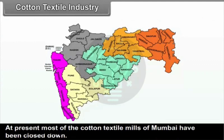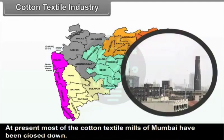At present, most of the cotton textile mills of Mumbai have been closed down. Cotton textile industry includes activities like processing of raw cotton, spinning, weaving, designing, etc.